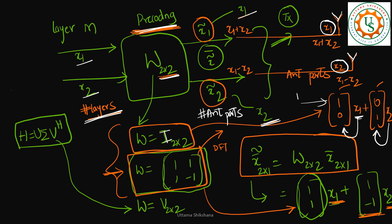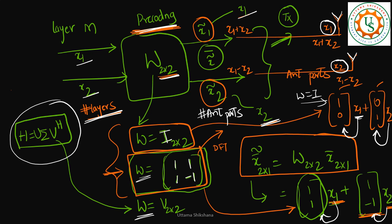The other case is where, by understanding the channel conditions, we choose the pre-coding matrix. The example matrix I considered is [1, 1; 1, -1]. In this case x1 is transmitted along direction [1, 1] and x2 is transmitted along direction [1, -1] — a different direction is chosen. So the output of the pre-coding block changes: x̃1 is not just x1 but x1 plus x2, and x̃2 is x1 minus x2. That is what is transmitted across antenna 1 and antenna 2.